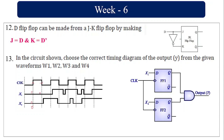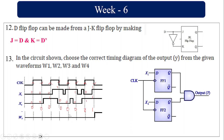At the negative edge, x1=0, x2=0, output is 0. At the next positive edge, x1=0, x2=1, output is 0. Negative edge: x1=1, x2=0, output is 0. Next positive edge: x1=1, x2=0, output is 0. Negative edge: x1=1, x2=0, output is 0. Next positive edge: x1=0, x2=1, output is 0. Negative edge: x1=1, x2=1, output is 1. So this is waveform W3.